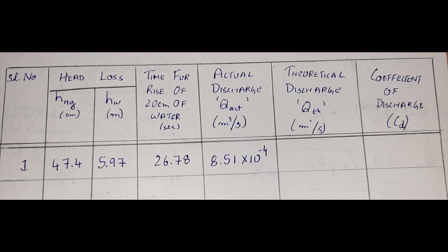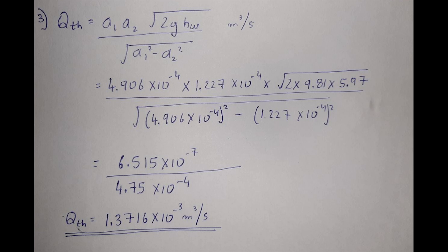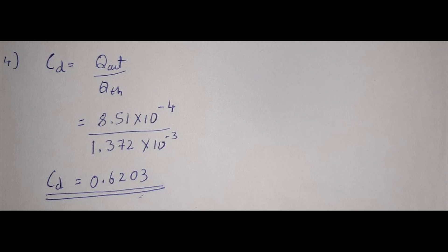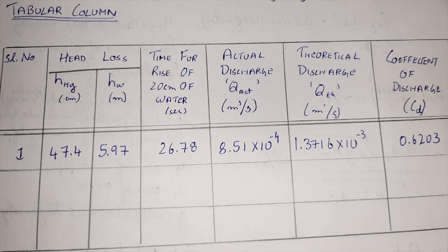The values obtained after calculations are filled in the tabular column, and thus the result is obtained. In a similar way, the procedure is followed for another 2 to 3 trials, and thus the experiment is concluded.